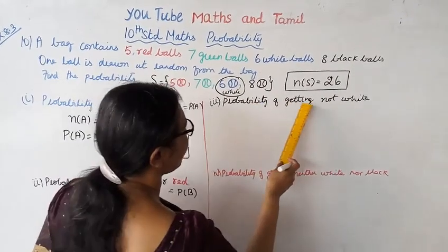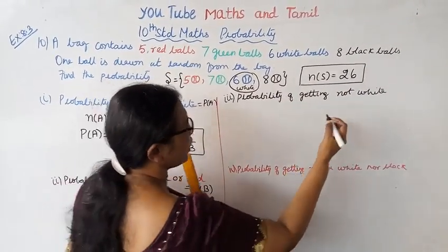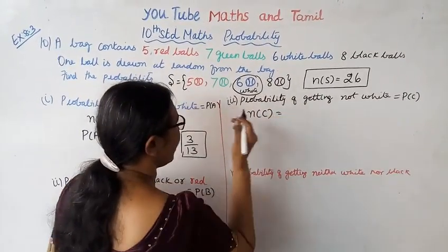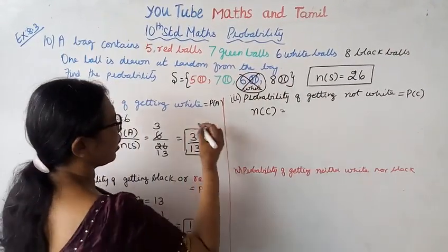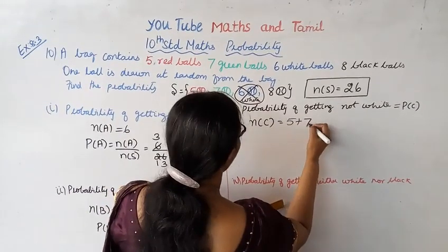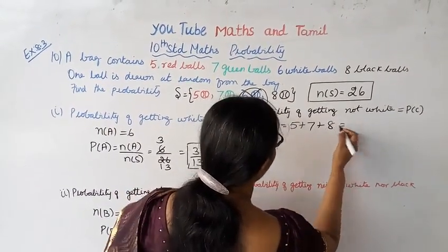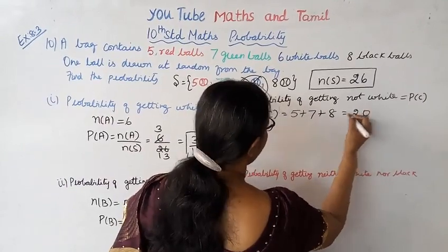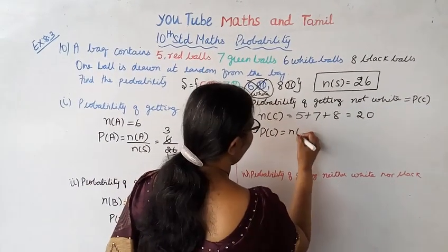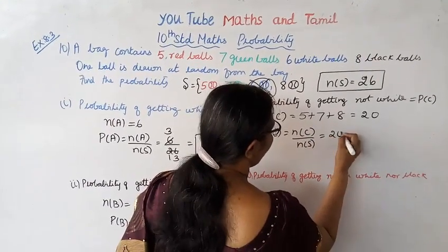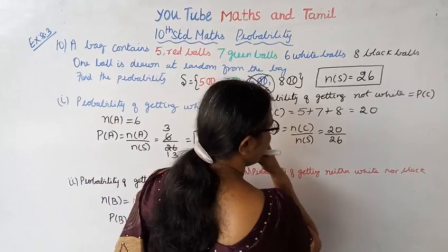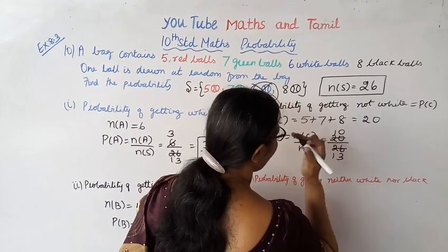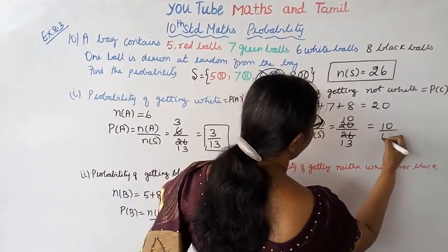Third, probability of getting not white. P(C), n(C). Not white means all balls except white, which is 26 minus 6 equals 20. P(C) equals n(C) by n(S), that is equal to 20 by 26. Cancel: 2 goes into 10 and 13, so 10 by 13.